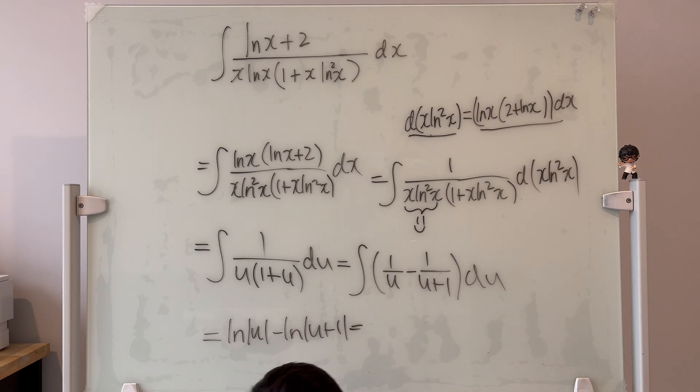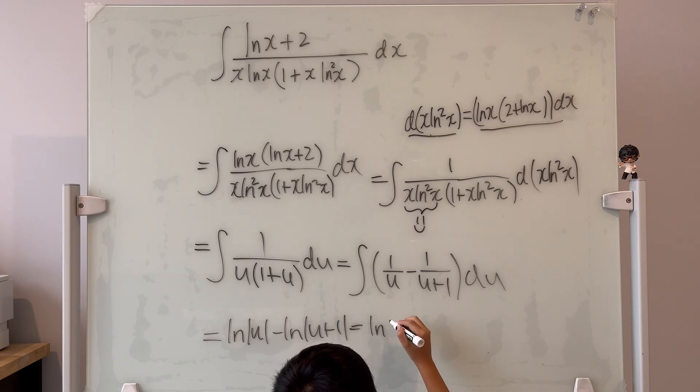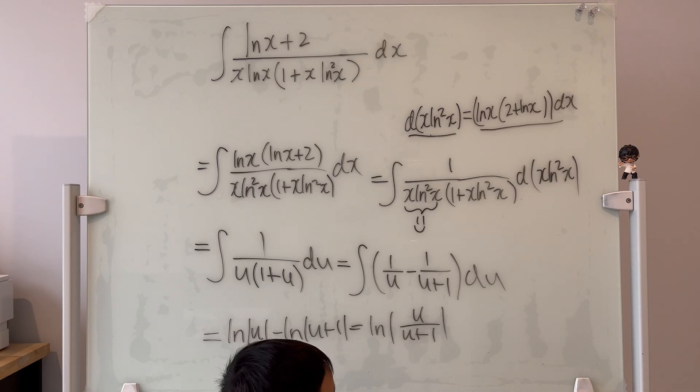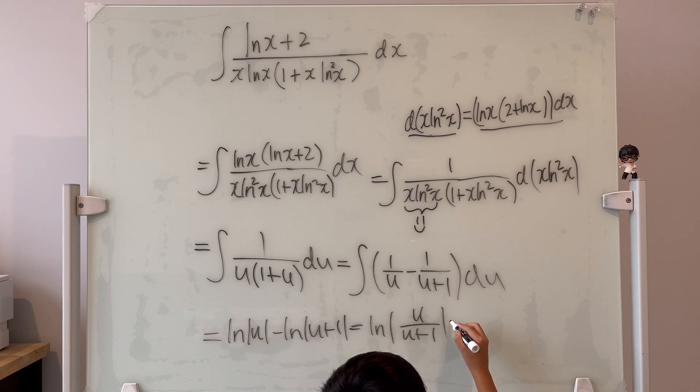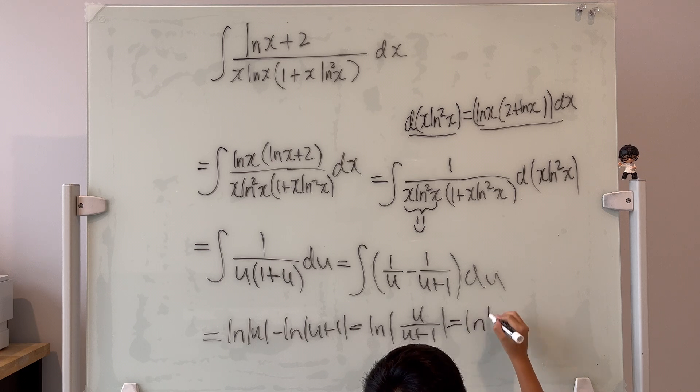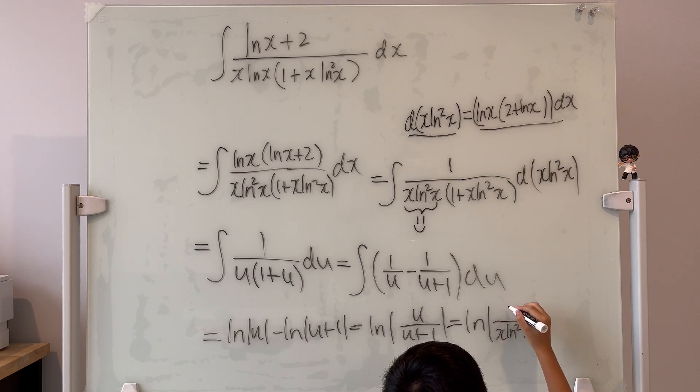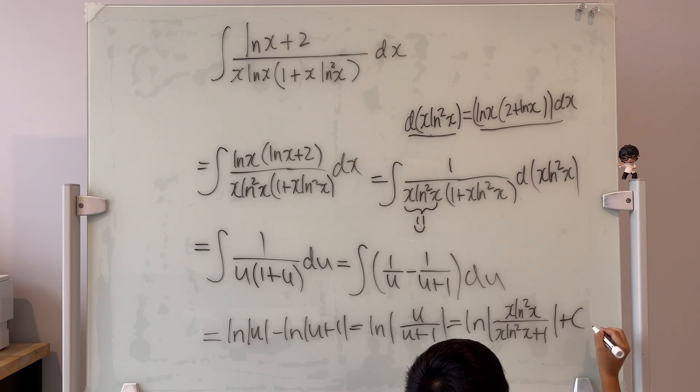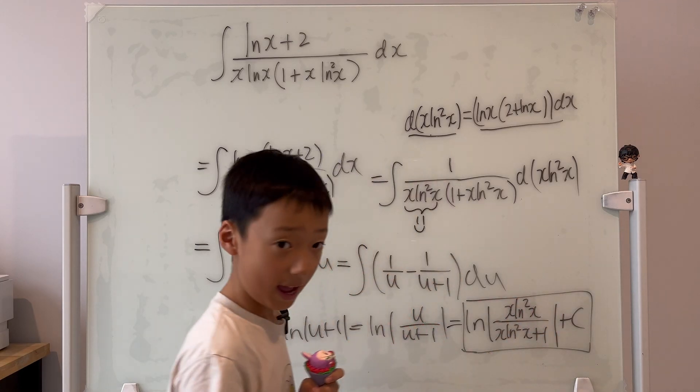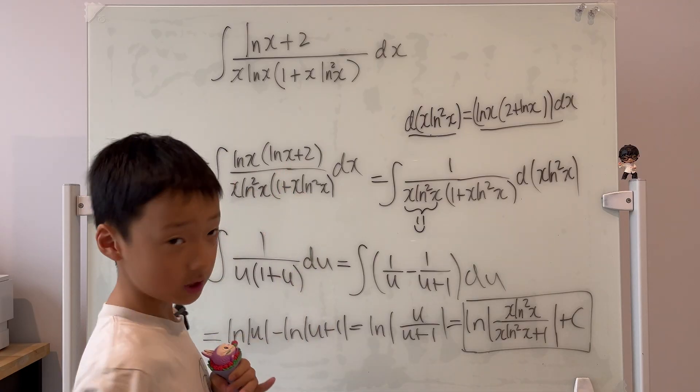So it's equal to ln of u minus ln of u plus 1. And this is equal to, you can combine these two ln together into a division. And you plug in my smiley face back into x's. So it's equal to ln of, the bottom being x ln squared x plus 1, and the top being x ln squared x plus c. Don't forget the plus c. So this is the answer for my first integral.